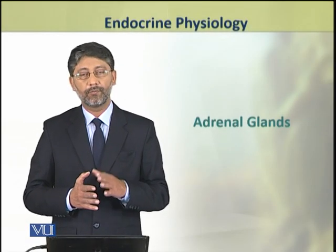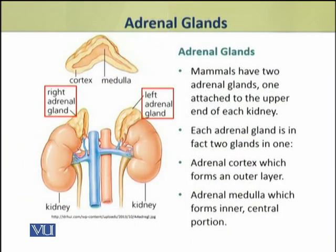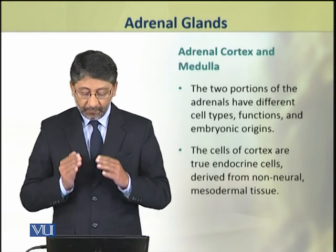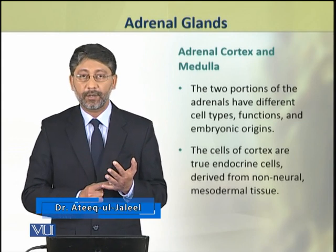Dear students, in this topic we shall discuss adrenal glands. Mammals have two adrenal glands, which are attached to the upper end of each kidney. The adrenal glands are in fact dual glands. Each gland has an outer layer and an inner layer. The outer layer is known as the adrenal cortex, whereas the inner central portion is known as the adrenal medulla. These two portions of adrenals have different cell types, different functions, and different embryonic origins.